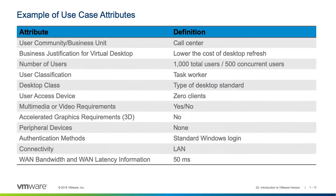Once you've built all of your use cases and know the mix of applications and peripherals, you can create a table similar to what we call the use case attribute table. From this, you'll be able to build your pools of desktops within the environment. For example, the user community and business unit — in this example, a call center — business justification, lower cost of desktop refresh, and so on. You can quickly see how many users you'll need in the pool, the type of user, the type of desktop they need, whether they need special graphics or remote access. It's worthwhile to build this for each use case, as you'll be able to see where you can use the same master or gold image and leverage the same pool types across different use cases, making administration easier.